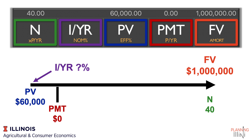Now let's put those numbers on a timeline. We start with PV at $60,000 — that's what we have today. And we know we're going to grow it to a million in the future, so we put a million with FV. We don't have any payment, so payment's going to be zero. And we have 40 periods, or 40 N, to get there. That leaves I as the variable we're solving for — what interest rate do I need to find?